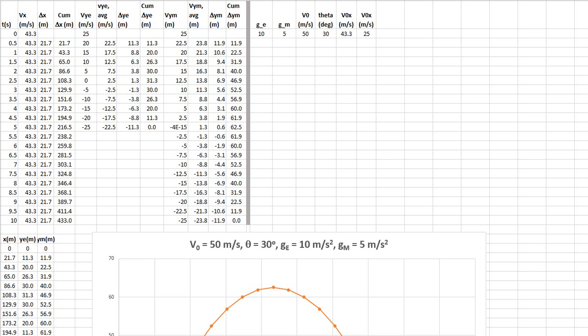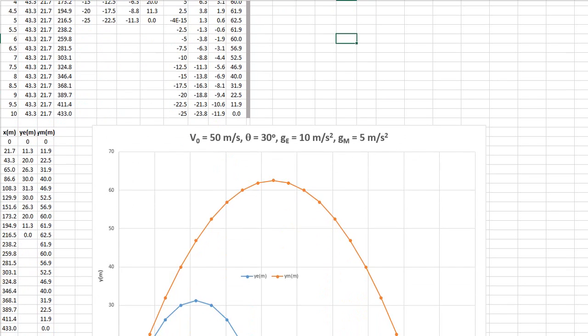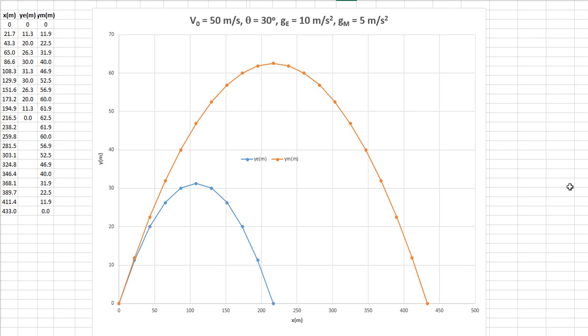In this next graph, I have plotted the horizontal position versus the vertical position for both the earth and the moon. On the horizontal axis, we have the distance in the x direction, and in the y direction, we have the distance in the vertical direction. These are both in meters.